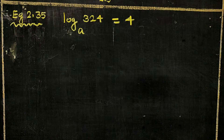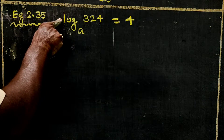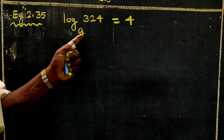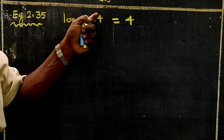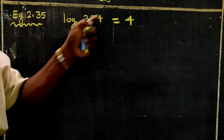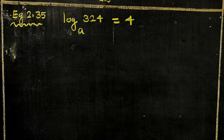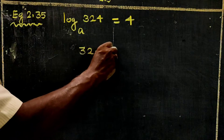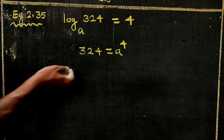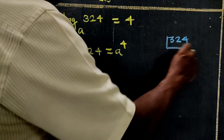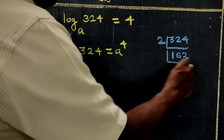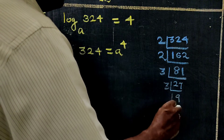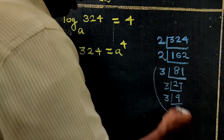If the logarithm of 324 to the base A is 4, what is the value of A? The logarithm of 324 to the base A is 4, 2, 1. And where is the two?